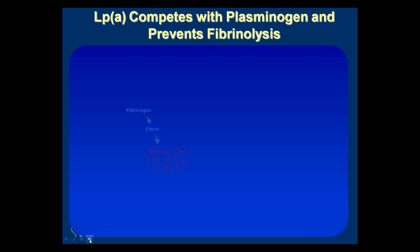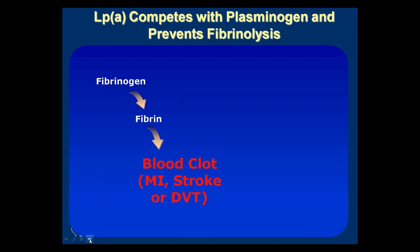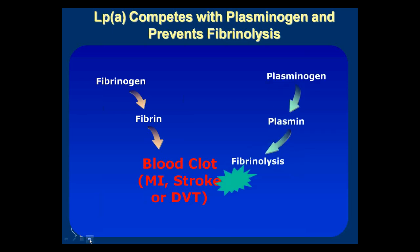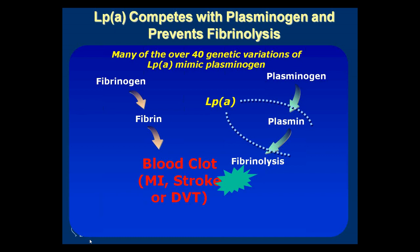How does LP(a) compete with plasminogen? If there's a blood clot — like an MI, stroke, or deep vein thrombosis — fibrin is generated and the fibrin makes the clot. Typically, plasminogen will come along, release plasmin, and dissolve the clot. Unfortunately, if we have high LP(a), it looks structurally and biochemically very much like plasminogen — it has the same entities on the molecule. It then competes with plasminogen, binds to the clot, and blocks plasminogen so the clot continues to grow.